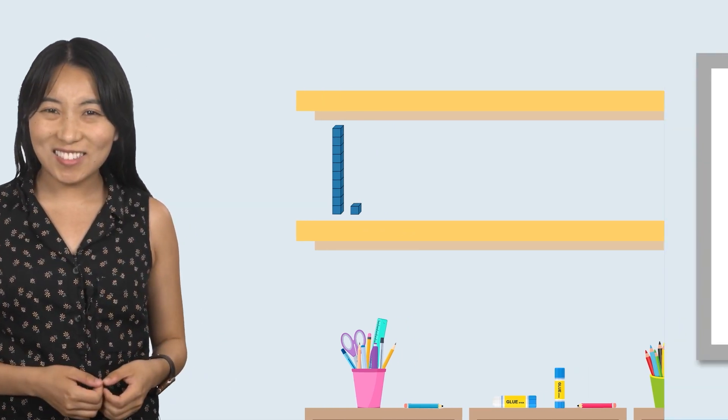We'll definitely need our base ten blocks to help us solve this mystery. Let's get started. The first mystery number says, I have one ten and five ones. What number am I? Let's build it with base ten blocks first.